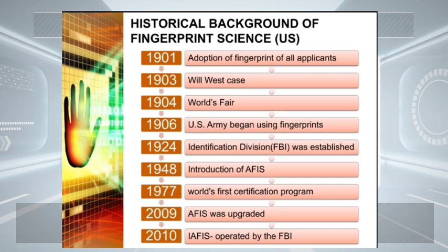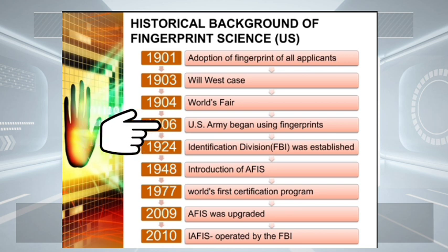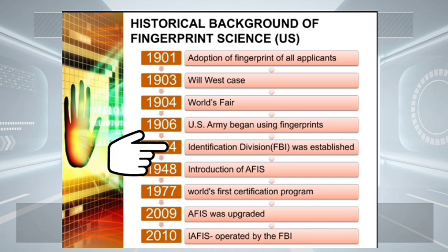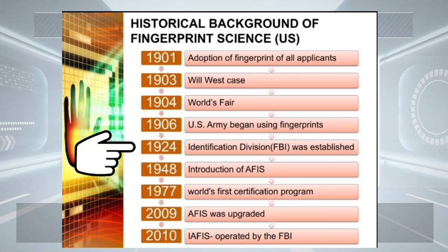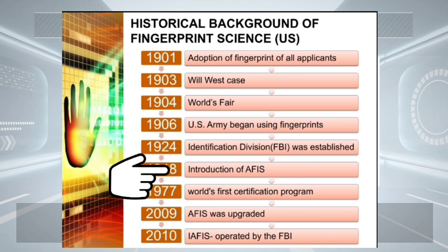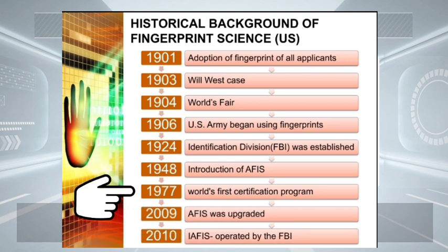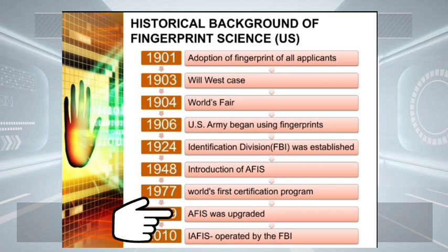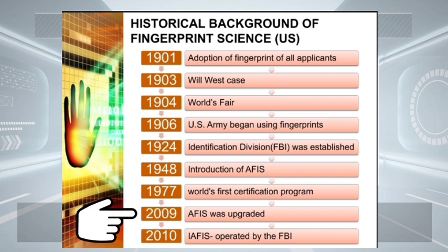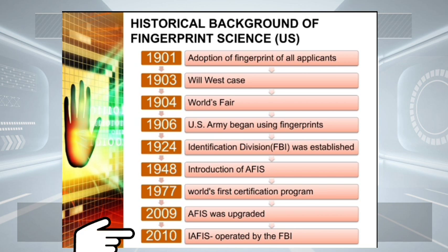In 1904, the World's Fair in Saint Louis was conducted wherein representatives from Scotland Yard trained several US police officials. In 1906, the US Army began using fingerprints. In 1924, the Identification Division of the Federal Bureau of Investigation was established. In 1948, the Automated Fingerprint Identification System was introduced. In 1977, the world's first certification program for fingerprint experts was given. In 2009, the Automated Fingerprint Identification System was upgraded. In 2010, the Integrated Automatic Fingerprint Identification System was operated by the FBI.